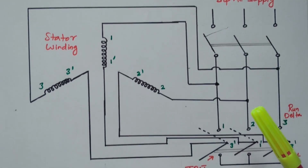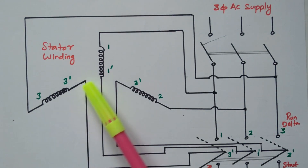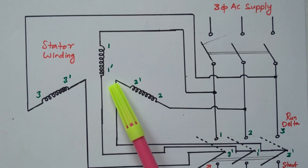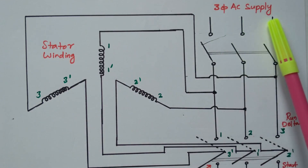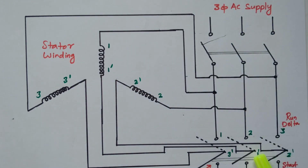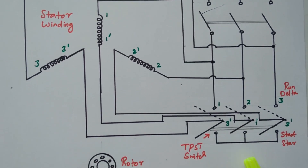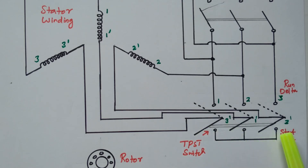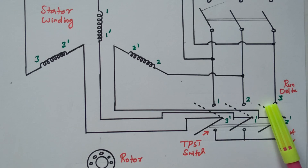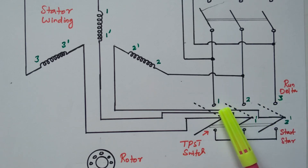Now refer the diagram. The stator winding is available here — stator winding phases: 1, 1-dash; 2, 2-dash; 3, 3-dash — three phases. Here the 3-phase AC supply is available, and a changeover switch, a TPST switch, is available. One side is connected with the star connection. If the switch is connected at the bottom end, the stator winding is connected in star — that is 1-dash, 2-dash, and 3-dash are connected. If the switch is connected at the upper end, it is a delta connection — that is winding portions 1, 2, 3 are connected.